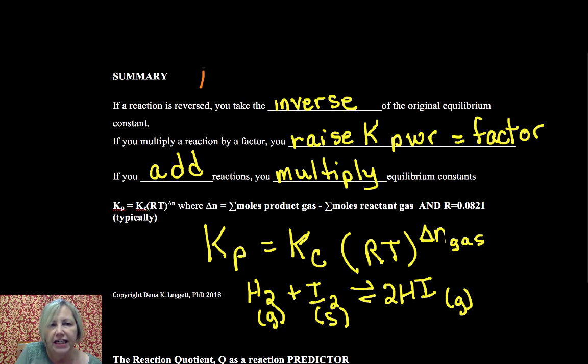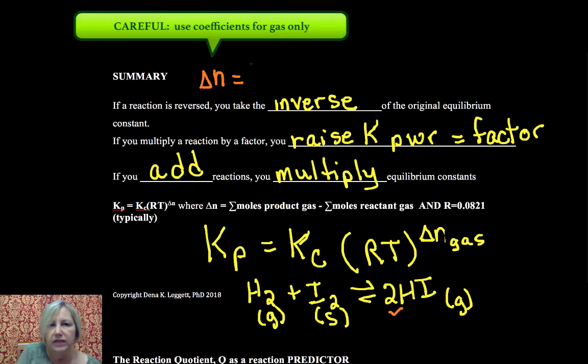So how do I find delta n for that? Well, the change in moles for gas, I have 2 moles for product, I only have 1 in the gas. So it'd be 2 minus 1 or delta n would be equal to 1.